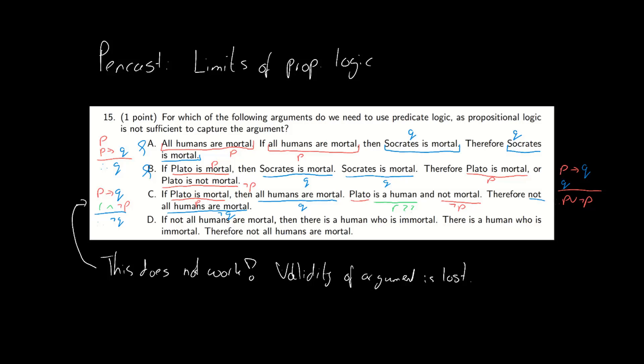But let's take a look at D anyway. 'If not all humans are mortal then there is a human who is immortal.' 'Not all humans are mortal, there is a human who is immortal.' Hang on.